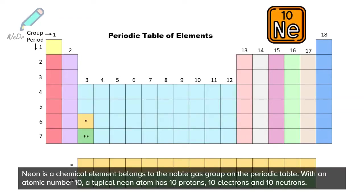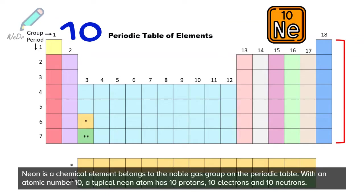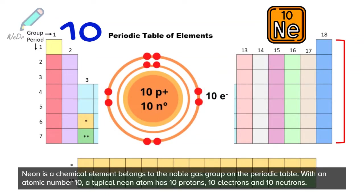Neon as a chemical element belongs to the noble gas group on the periodic table. With an atomic number 10, a typical neon atom has 10 protons, 10 electrons and 10 neutrons.